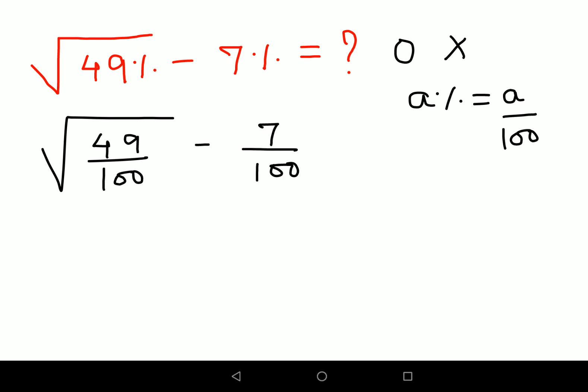Now the roots can be split with the numerator as well as denominator. So root of 49 is nothing but 7, root of 100 is 10, minus 7 upon 100.